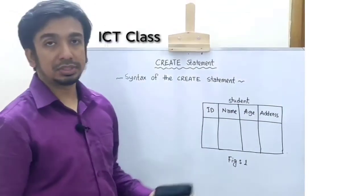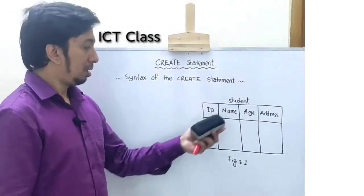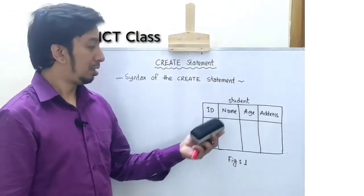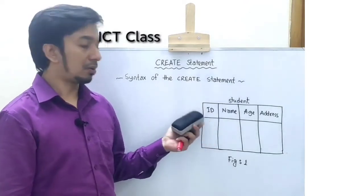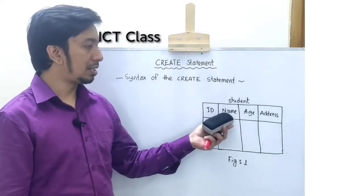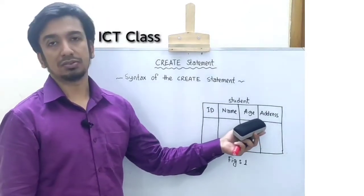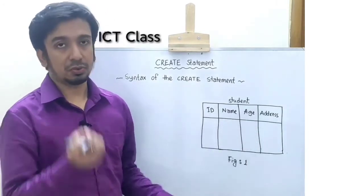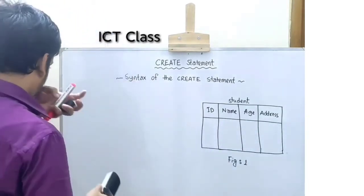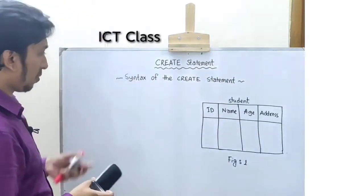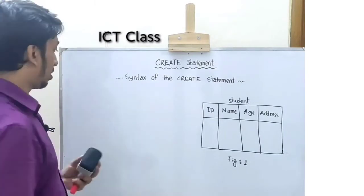Suppose this is our stem. Here you can see a table named 'student' with column names: id, name, age, and address. So we have four columns. Now, how do we write the SQL command using CREATE?